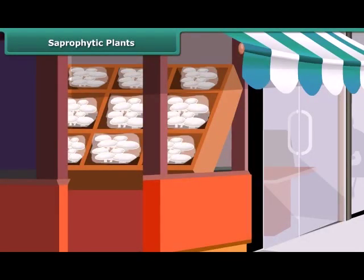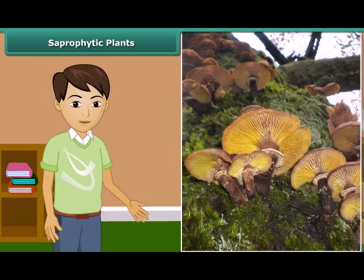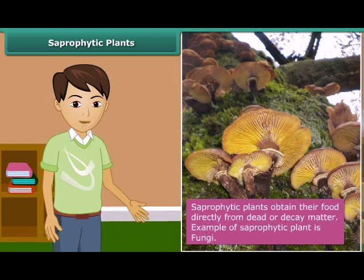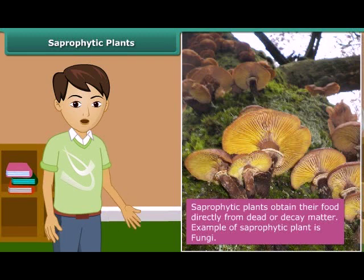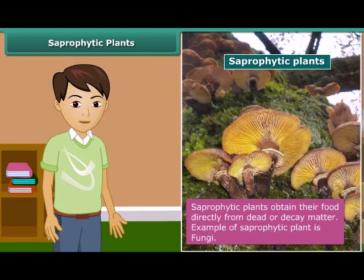When you go to a vegetable shop, you might have seen packets of mushrooms. Sometimes you may have also seen fluffy umbrella-like patches growing on rotting wood during the rainy season. These organisms are commonly called fungi, and they get their nutrition from dead and decaying matter. To get their nutrients from dead and decaying matter, they secrete digestive juice and convert it into a solution. This mode of nutrition in which organisms take in nutrients in solution from dead and decaying matter is called saprotrophic nutrition, and organisms which use this kind of mode of nutrition are called saprotrophs. Thus, fungi are saprotrophs.